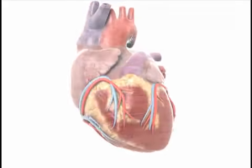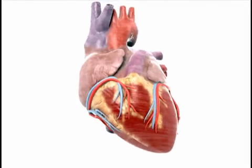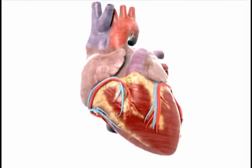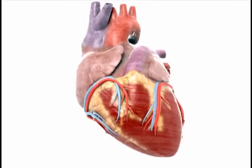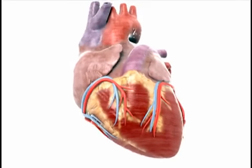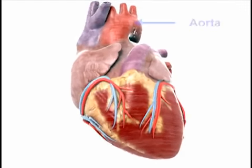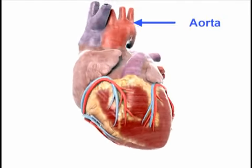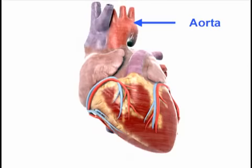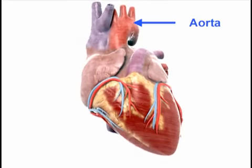Other less common diseases affect other parts of the heart. For example, when a patient is suffering from an aneurysm, that means that their aorta has swollen, creating a bulge in the artery.